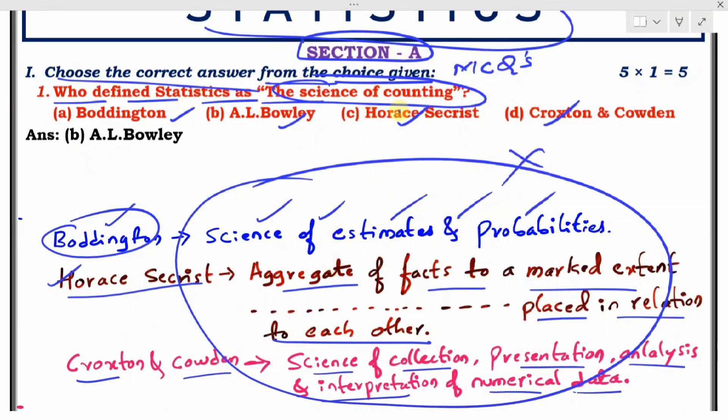All three are not given in this particular question. In this question it is asked about 'science of counting'. Who defined statistics as 'science of counting'? A.L. Bowley. So the correct answer is option B, A.L. Bowley.